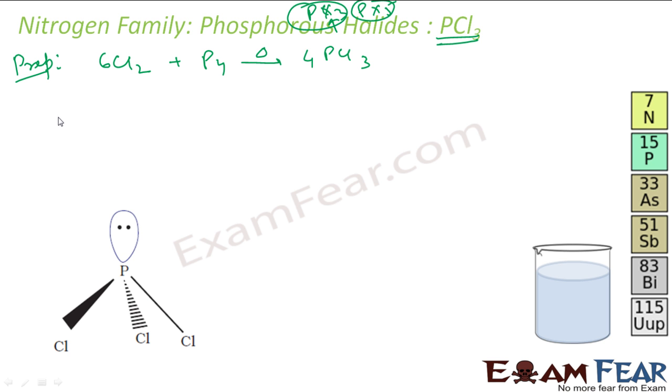This is one method. Another way: PCl3 is also produced by the action of thionyl chloride with white phosphorus. So you have white phosphorus, you react it with SOCl2, that is thionyl chloride.